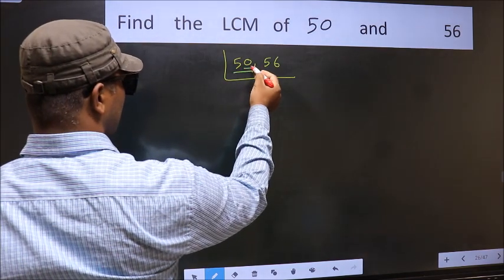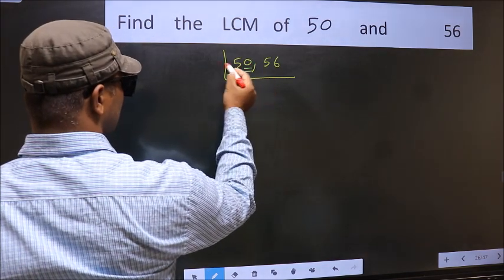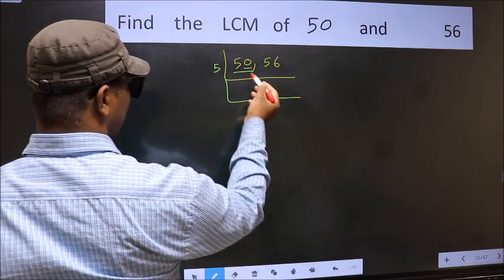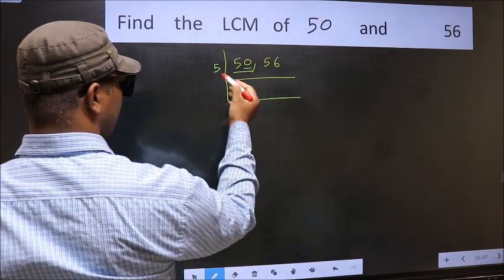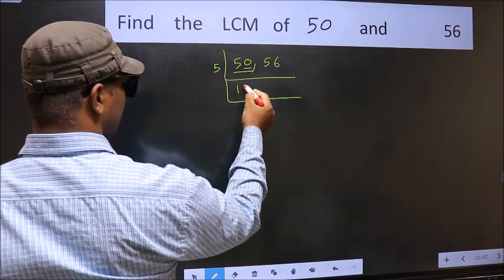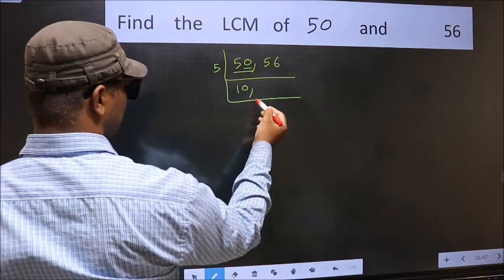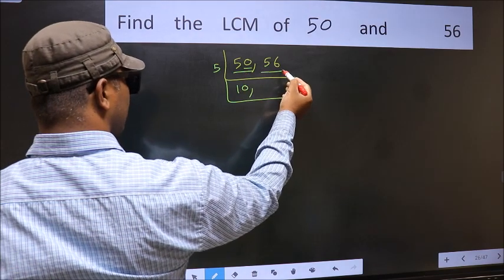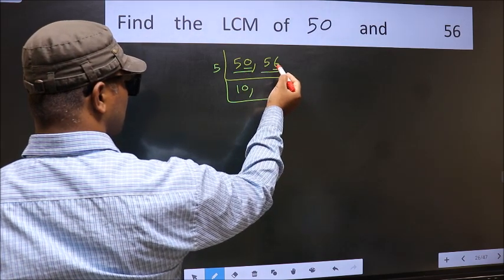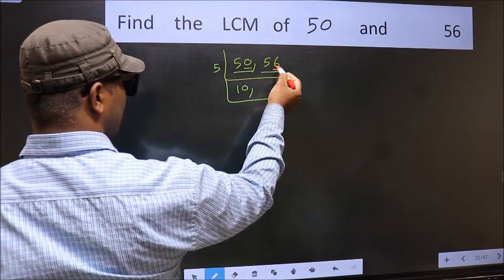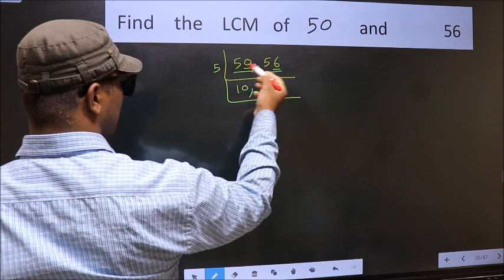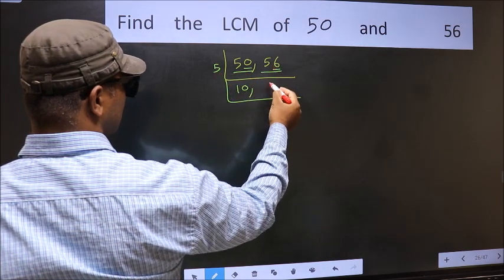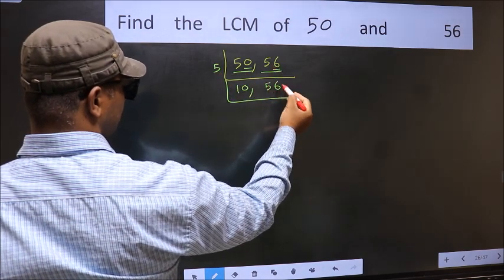For this number, the last digit is 0, so directly take 5. When do we get 50 in the 5 table? 5 tens are 50. The other number 56 — last digit is neither 0 nor 5, so it is not divisible by 5, so we write it down as it is.